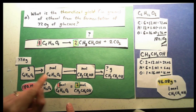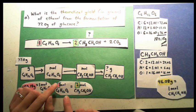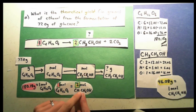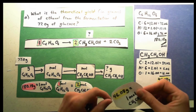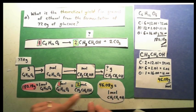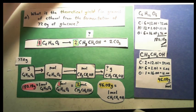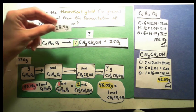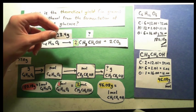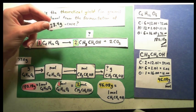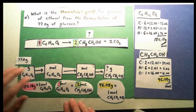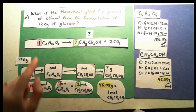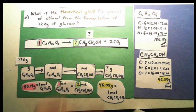Once we have the moles of glucose, we can use the moles of ethanol and the moles of glucose from the balanced chemical equation to convert to moles of ethanol. Once we have the moles of ethanol, we simply use the molar mass of ethanol to get grams of ethanol. That's what we need because the original problem asked for the theoretical yield in grams. So our plan is: grams of glucose → moles of glucose → moles of ethanol → grams. We have to do this because the balanced equation gives us moles of one substance to moles of another.